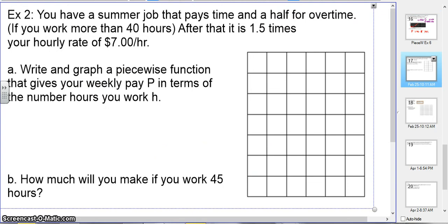Let's take a look at the second question. It says I have a summer job, and it pays time and a half for overtime. Overtime is if you work more than 40 hours. After that, it's 1.5 times your hourly rate of $7 an hour. So we're going to write and graph a piecewise equation that gives my weekly pay in terms of the number of hours I work. So P or F of H equals, if I work 40 hours, it's $7 an hour. So 7H, and that's for hours in between 0 and 40.